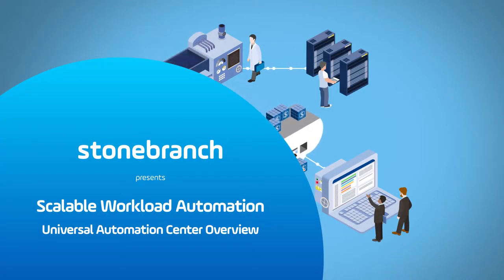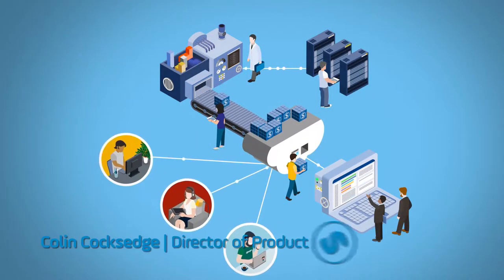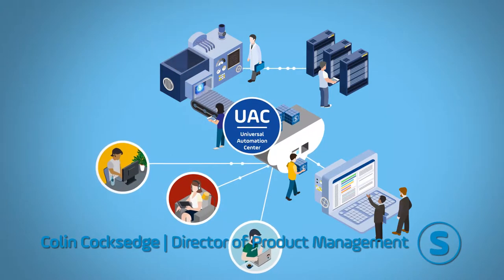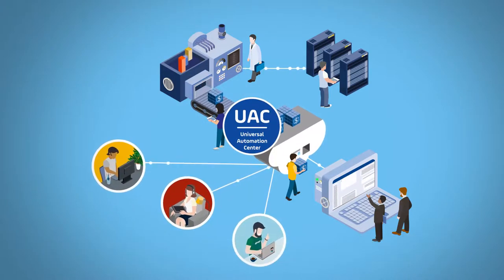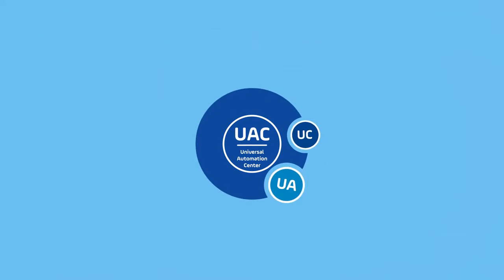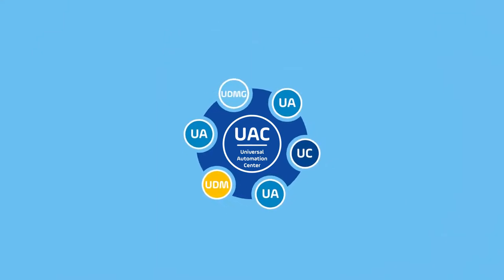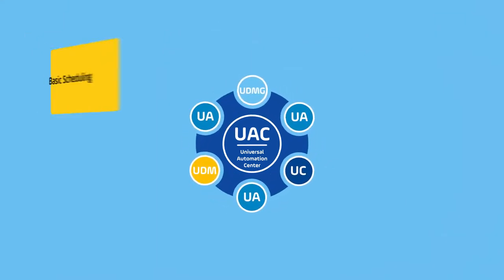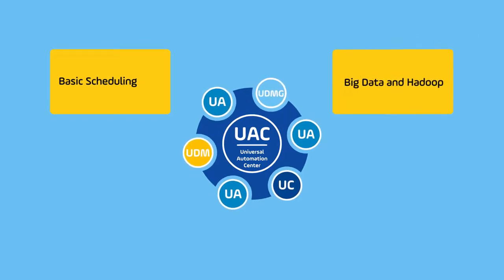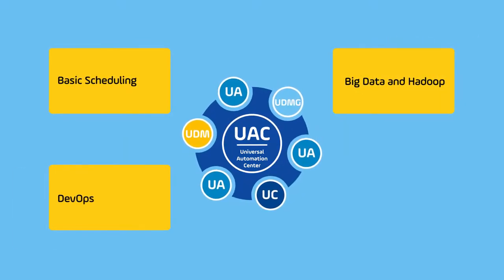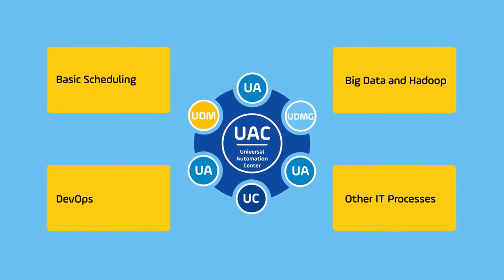We're going to take a brief look at Stonebranch's work automation solutions. The Universal Automation Center is a suite of automation solutions used by companies around the globe to manage automation on all of their platforms, automating anything from traditional batch scheduling, big data automation, DevOps toolchain management, and many other critical IT processes.